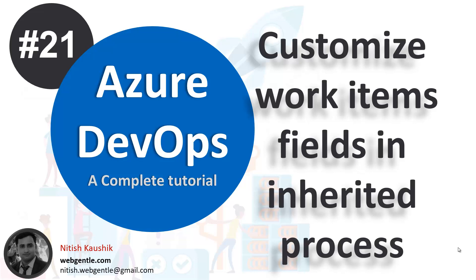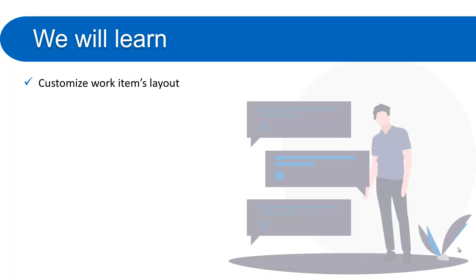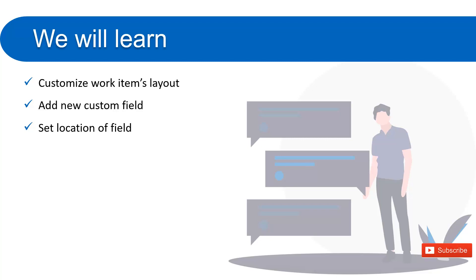Now it's time to learn how to customize the fields under a particular work item. In this video we will learn how to customize item layouts, how to add a new custom field, and how to set the location of a field — meaning you can place it on the left side, right side, middle part, or any other tab. We will also learn how to set the type of a field: dropdown, checkbox, text area, calendar, and more.